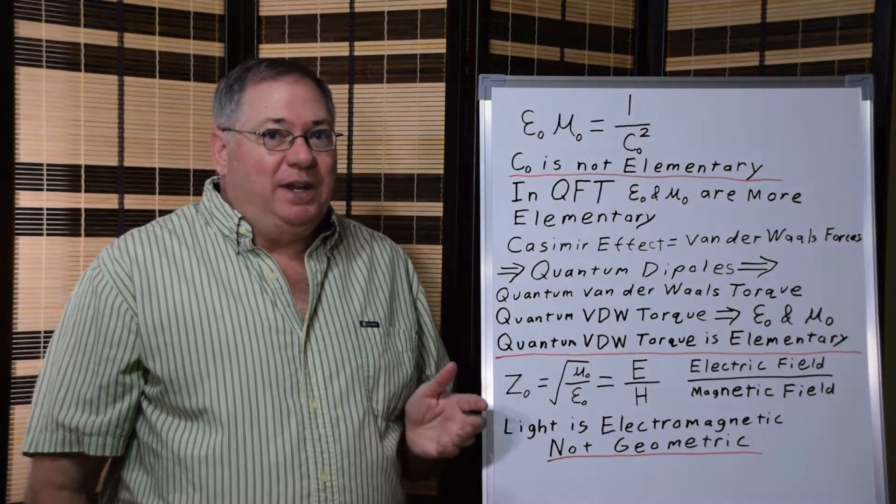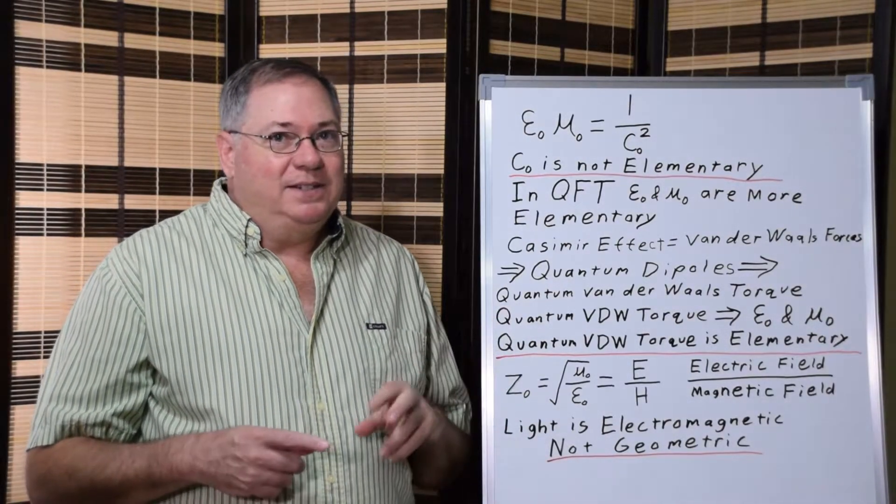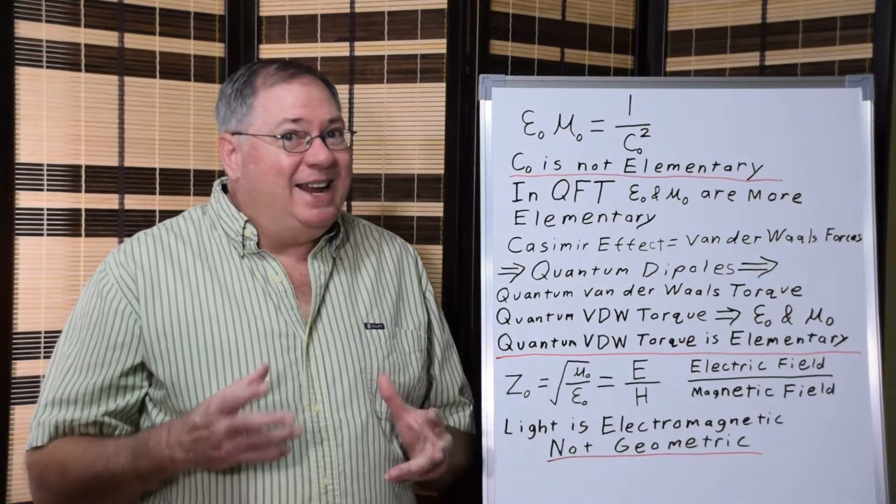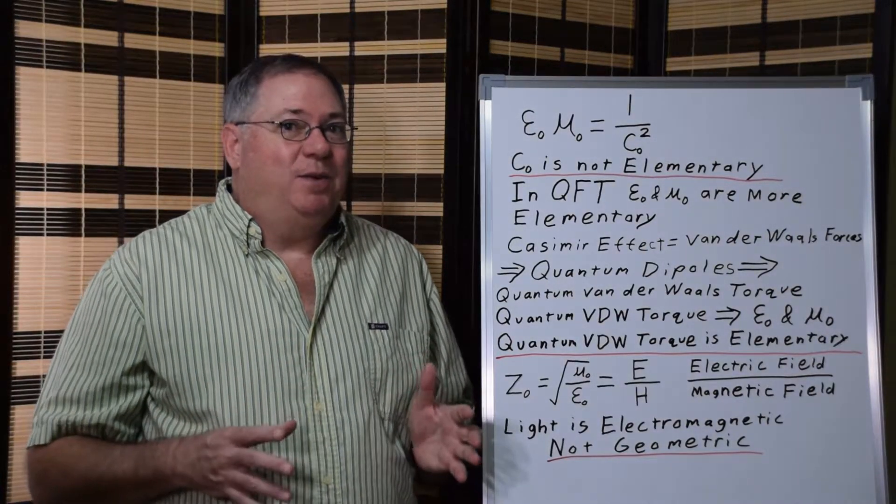And it's actually the permittivity that's the most fundamental, followed very quickly by the permeability. Epsilon followed by mu. Those are properties of space, properties of the quantum field. And the speed of light is derived from that. Now, a lot of physicists would like to say C's more fundamental because they have one constant instead of two to worry about. But that's not actually how the physics of the quantum field works.